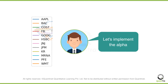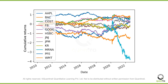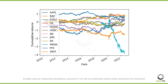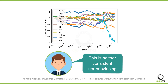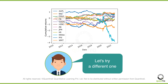You can calculate this alpha by simply using a vectorized operation. And after plotting, the results would look something like this. You would agree that it looks neither consistent nor convincing. We could perhaps do some more exploration with different stocks, or move on to the next alpha.